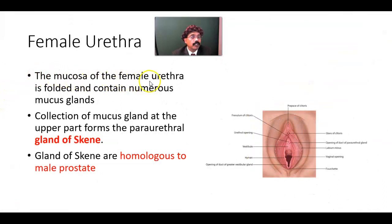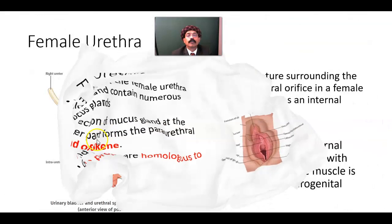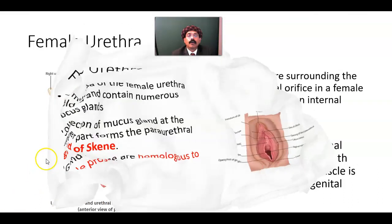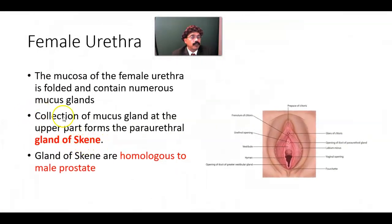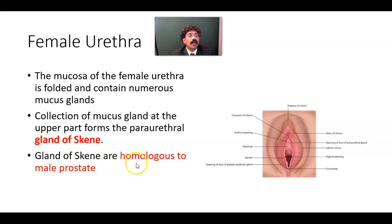The mucosa of the female urethra is folded and contains numerous mucous glands. The collection of mucous glands at the proximal or upper part of the female urethra forms the paraurethral glands of Skene. These open on either side of the urethra, and the glands of Skene are homologous to the male prostate.